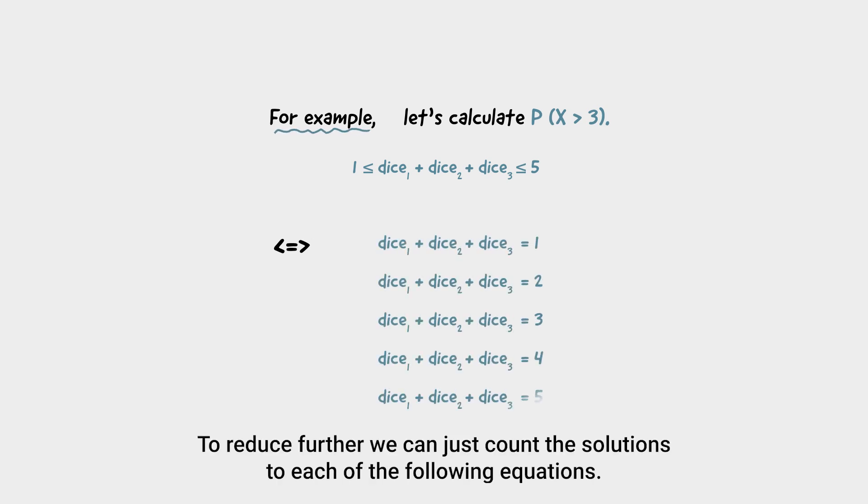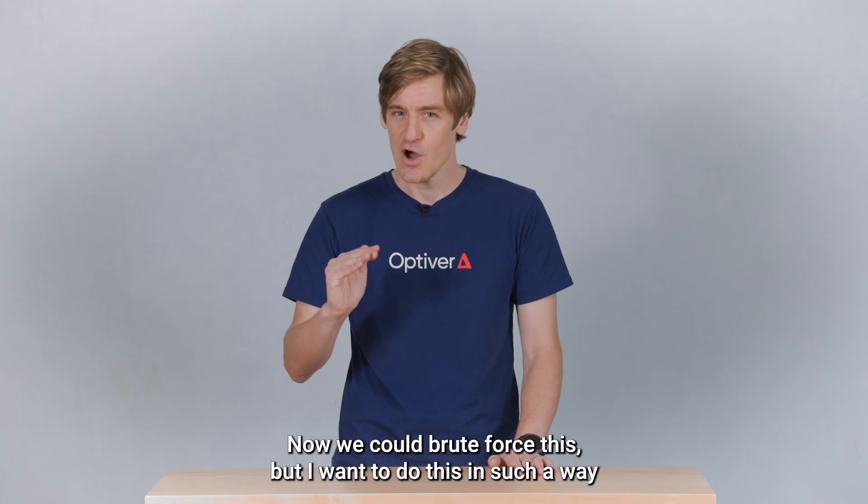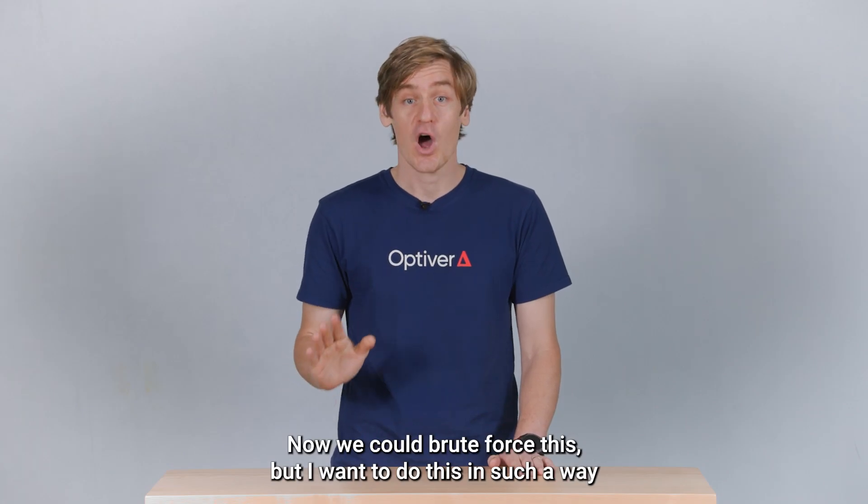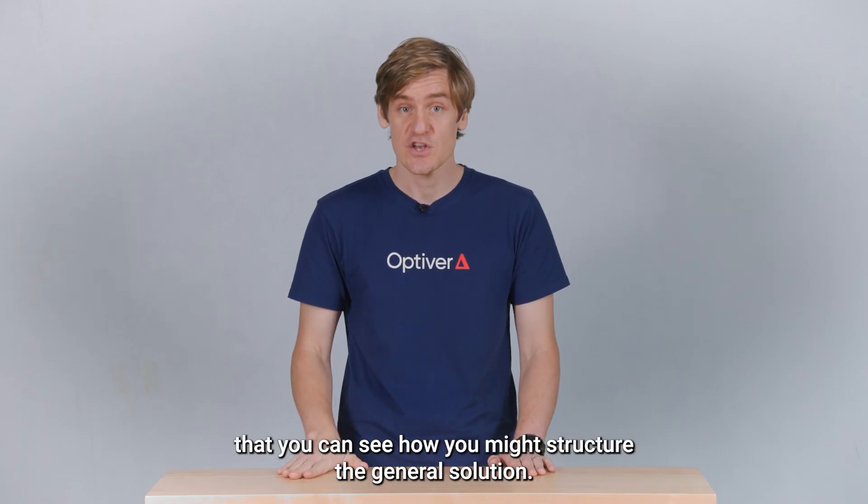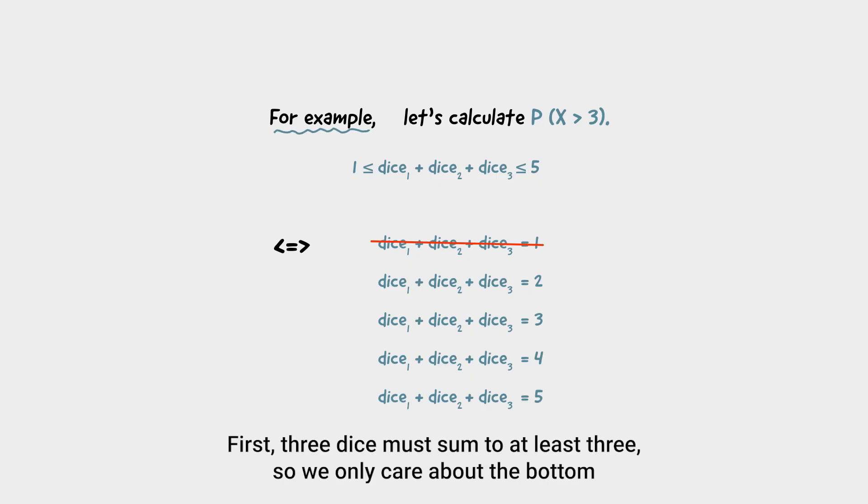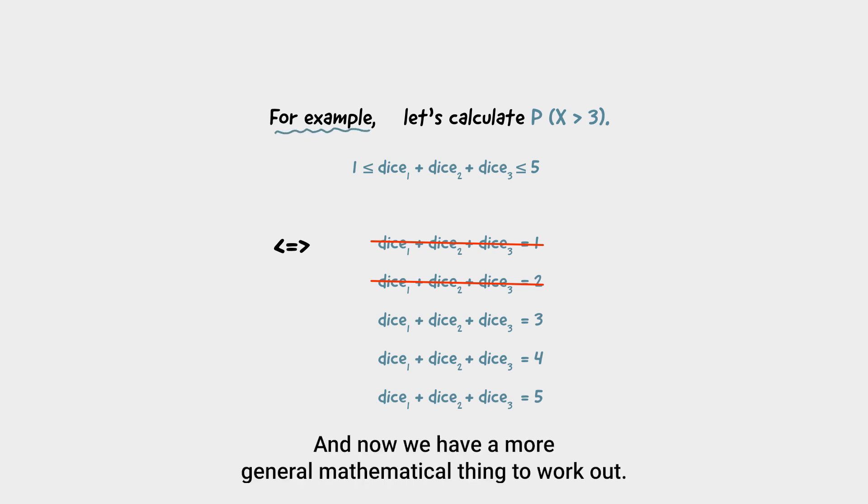To reduce further, we can just count the solutions to each of the following equations. Now, we could brute force this, but I want to do this in such a way that you can see how you might structure the general solution. First, three dice must sum to at least three, so we only care about the bottom three equations. And now, we have a more general mathematical thing to work out. Given some positive integer m, how many ways can I express it as the sum of three positive integers?